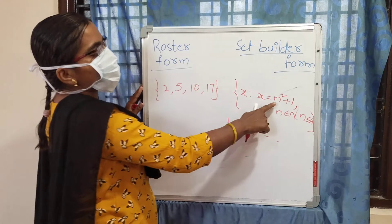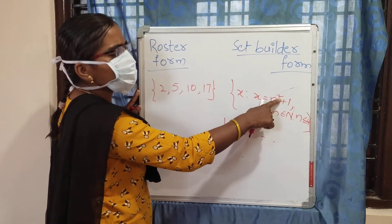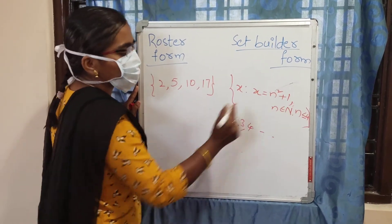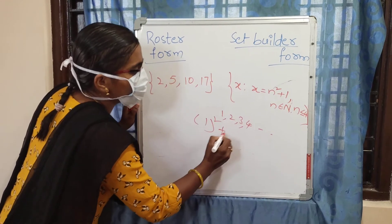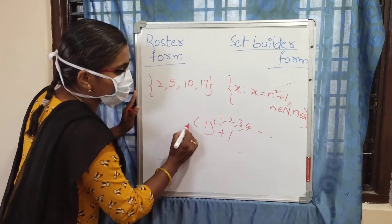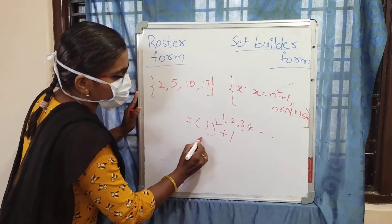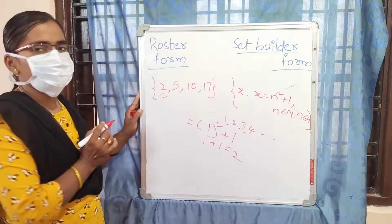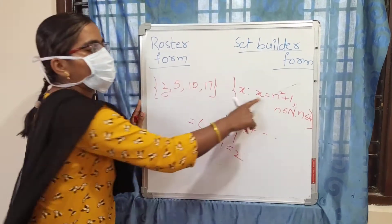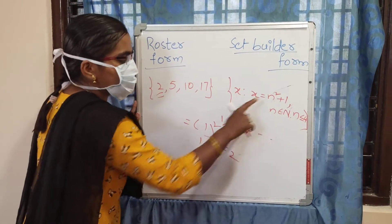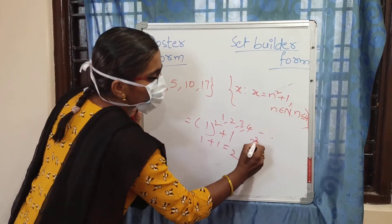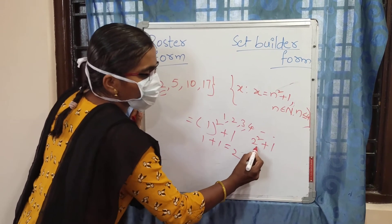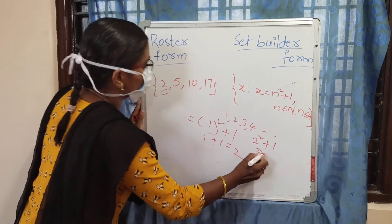If N=1: 1² + 1 = 1 + 1 = 2. That's the first element. If N=2: 2² + 1 = 4 + 1 = 5. That's the second element. If N=3: 3² + 1 = 9 + 1 = 10. That's the third element.